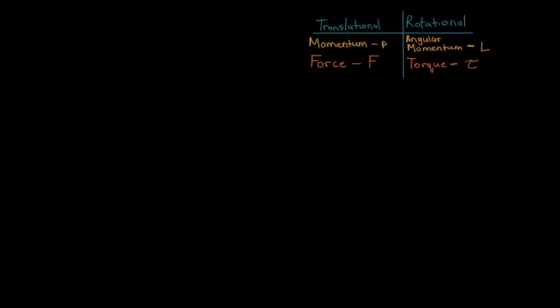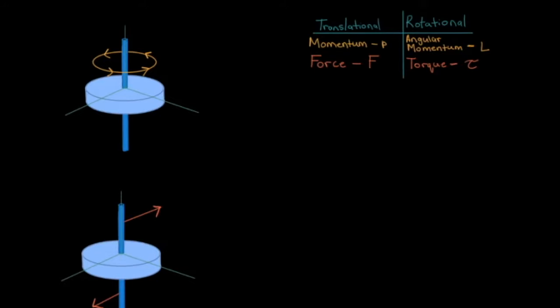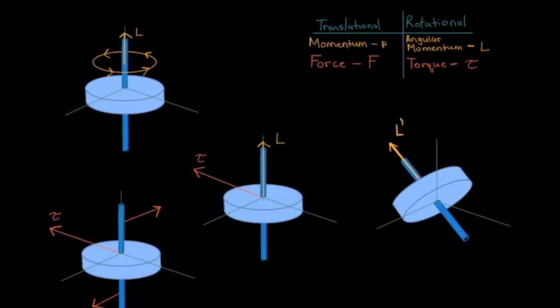Now let's make things interesting. Here we have the wheel flat, spinning along the vertical axis, and then we torque it in this direction — which way will the wheel precess? Step one: we find the angular momentum by curling our fingers in the direction of the spin — our thumb should be pointing upward. Step two: we find the torque by curling our fingers in the direction of the expected rotation — our thumb points in this direction. Step three: L follows tau, so in this case it looks like the wheel is trying to stand up.